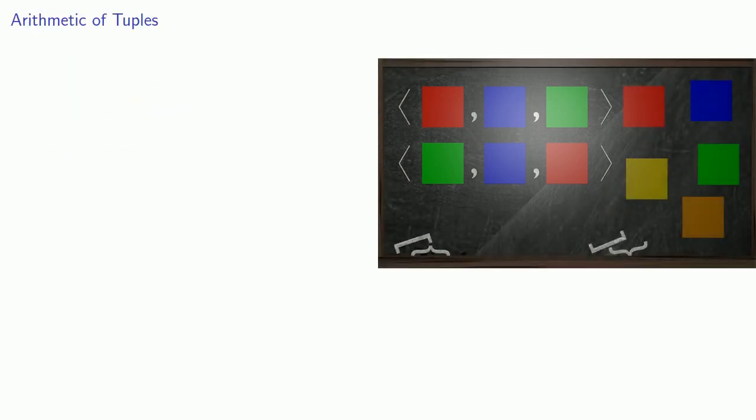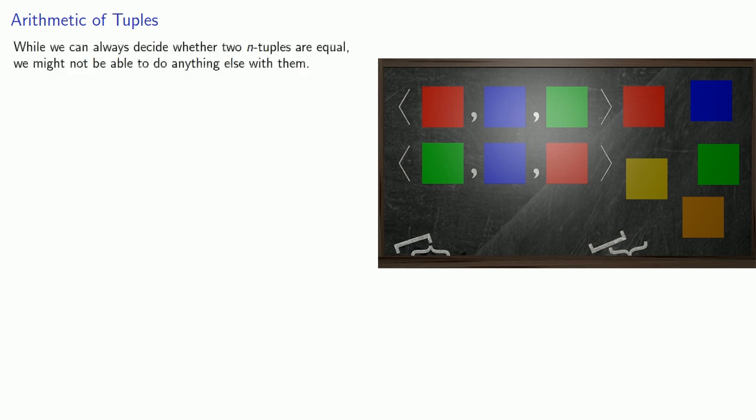After defining the equality of two tuples, we might try to do something else with them. But this could be a problem. We might not be able to do anything else. So we know these two tuples aren't equal, but which one is larger? And if we can't even decide that, we might have a further problem if we try to do some arithmetic with them.